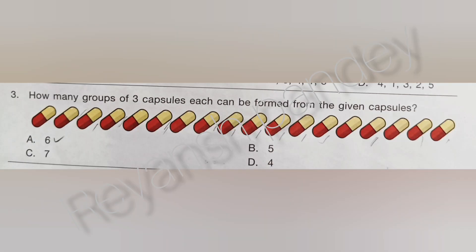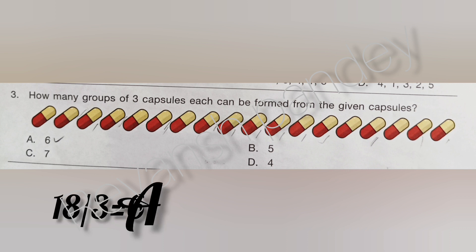How many groups of three capsules each can be formed from the given capsules? There are 18 capsules. We make groups of 3 capsules. So 18 divided by 3. Answer is 6. Answer is A.